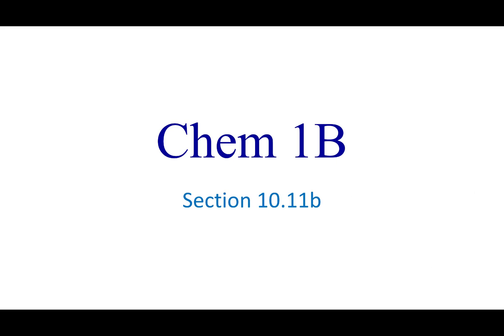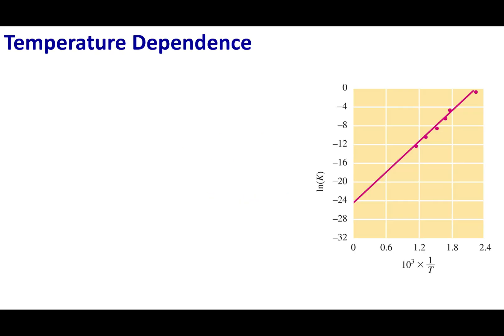Welcome to section 10.11b. In this lecture, we're going to look at temperature dependence and how it affects our thermodynamic values. In the last lecture we said that delta G naught equals negative RT ln K. We also said that delta G naught equals delta H naught minus T delta S naught.